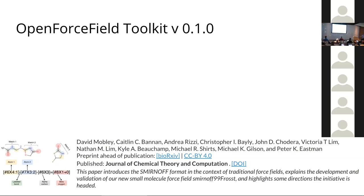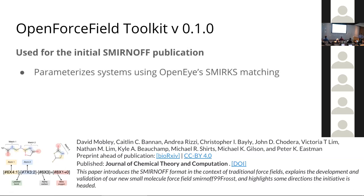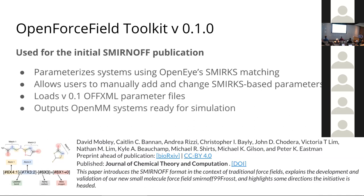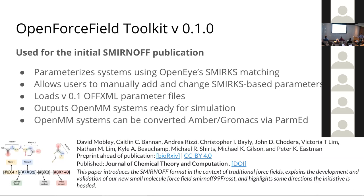We're working with two different versions of the Open Force Field Toolkit. The previous version is 0.1, which was used in the previous publication about SMIRNOFF. It relies on OpenEye — you need your system as OpenEye molecules — and uses OpenEye SMIRKS matching to apply SMIRKS-based parameters. This is nice because you can open a parameter in Python and modify force constants, bond lengths, and such, and you can write or add new ones. These load an old version of the parameter files, which you'll need to keep in mind when transitioning to SMIRNOFF version 1. By default, it outputs OpenMM systems, which can be converted to AMBER or GROMACS using ParmEd.